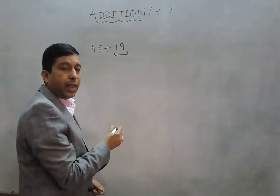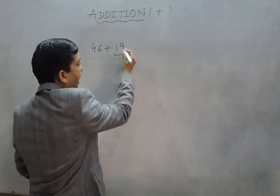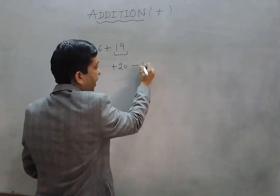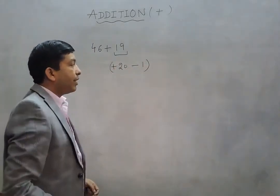Instead of adding 19, we're adding 20 to the number and then subtracting 1.